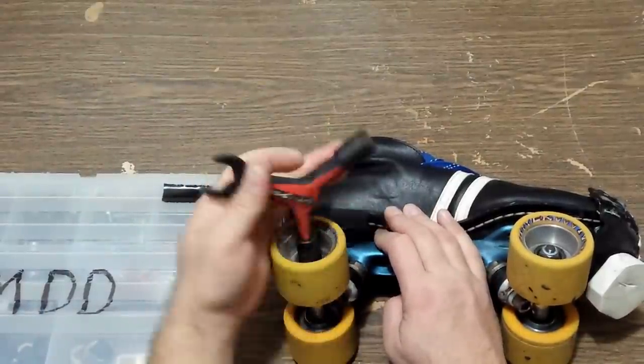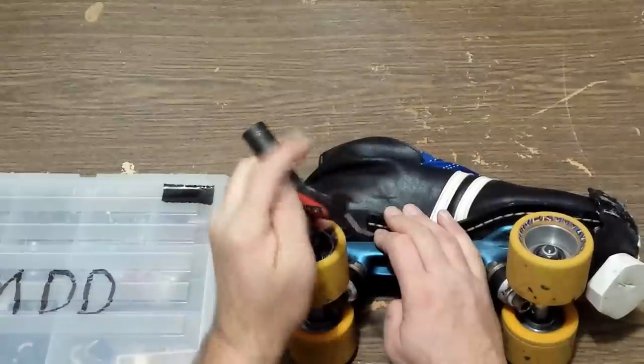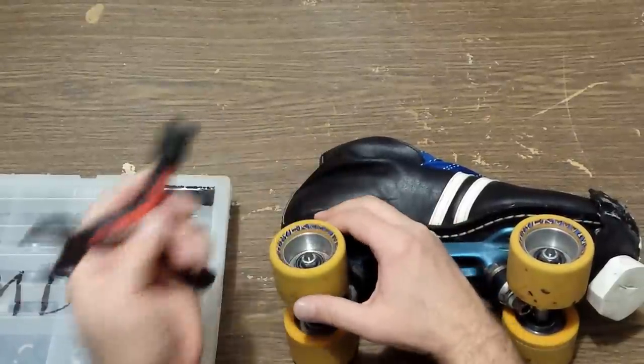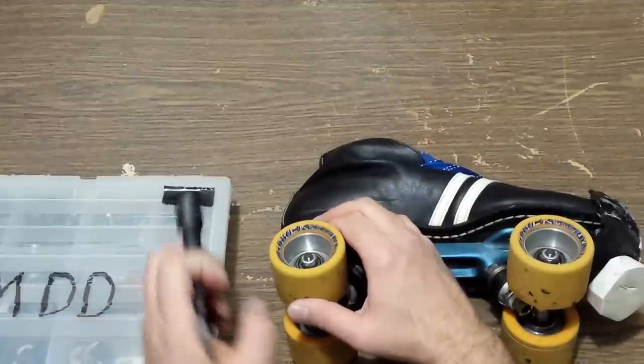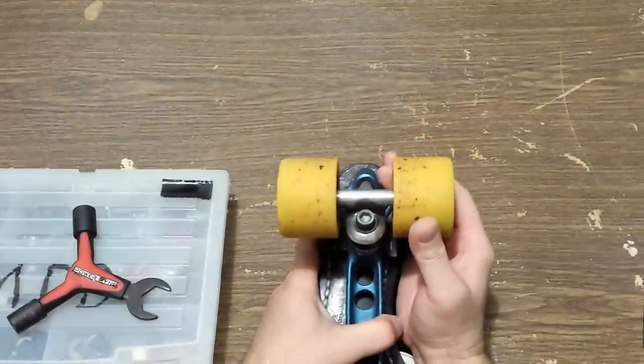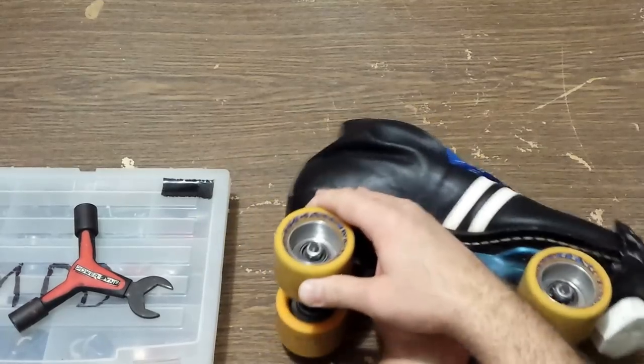So what we're going to do is tighten this wheel on down until we feel it get snug. That's what I call the snug point. That wheel is completely snug, zero movement, no wiggle, no anything.